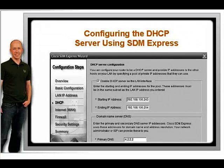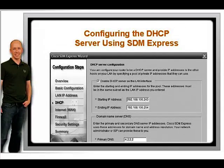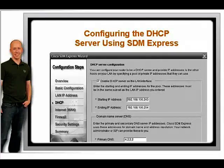Often with DHCP, we want to exclude certain addresses, such as the router itself, and maybe servers or printers that are already statically configured. In our case, we don't have a server to worry about, but our switch will need an IP for management. We will give it 192.168.100.242.